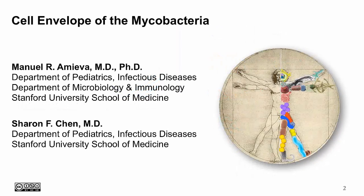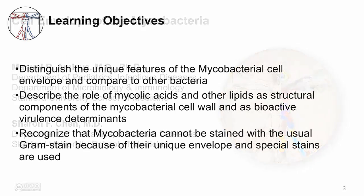In this video, I'm going to introduce you to a unique bacteria called mycobacteria and show you the relationship between the cell envelope of mycobacteria to other bacteria. The learning objectives are to distinguish the unique features of the mycobacteria cell envelope and compare to other bacteria, to describe the role of mycolic acids and other lipids as structural components of the mycobacteria cell wall and as bioactive virulence determinants, and to recognize that mycobacteria cannot be stained with the usual gram stain because of their unique envelope and special stains are used.